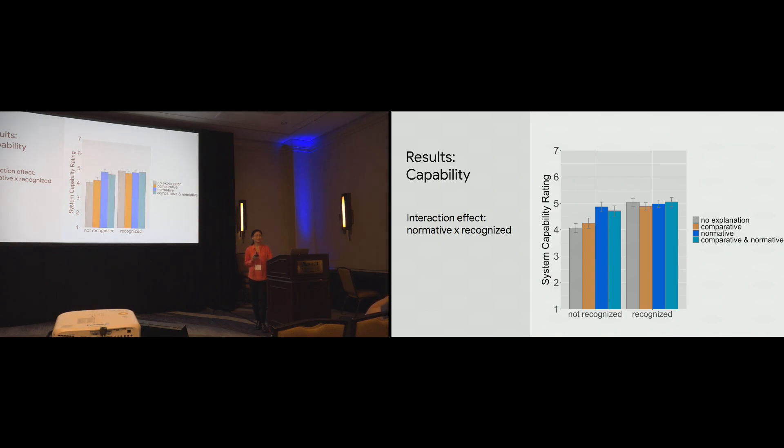So, first, looking at the results on capability, we found that there was an interaction effect between normative explanations and whether or not the drawing was recognized. So, if a user's drawing was recognized, we saw no significant difference between any of the explanations. However, when the drawings were not recognized, those who had seen normative explanations felt that the system had higher capability than those who had not seen a normative explanation.